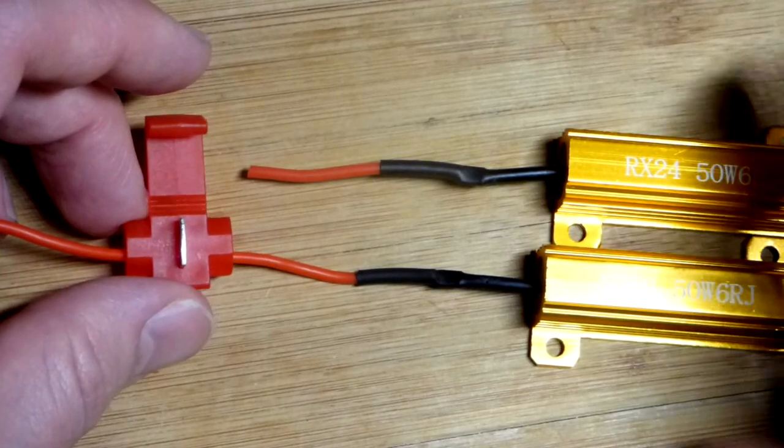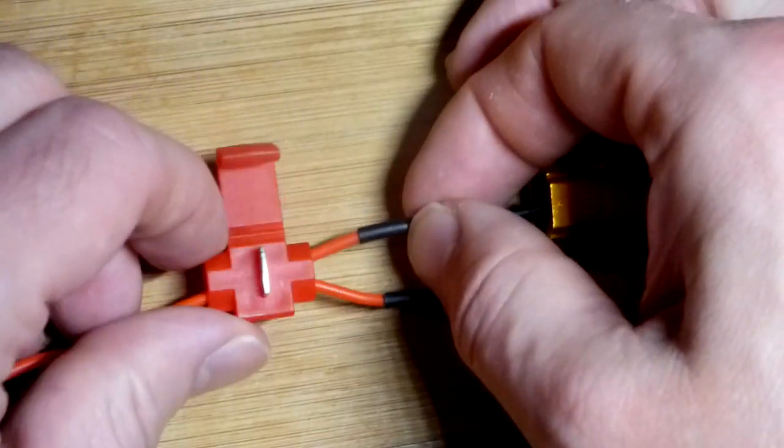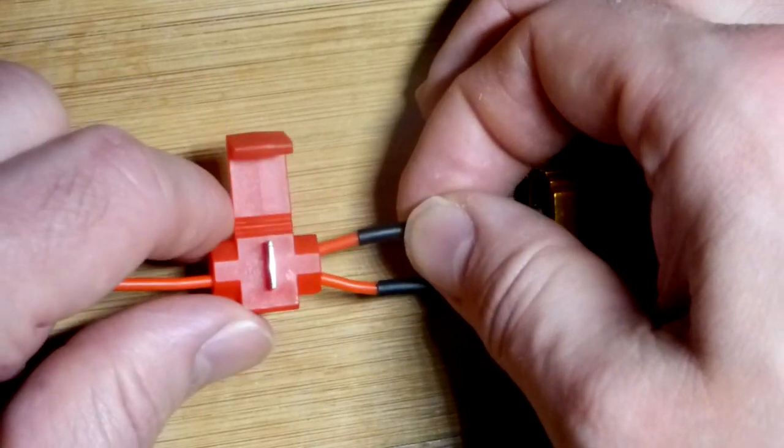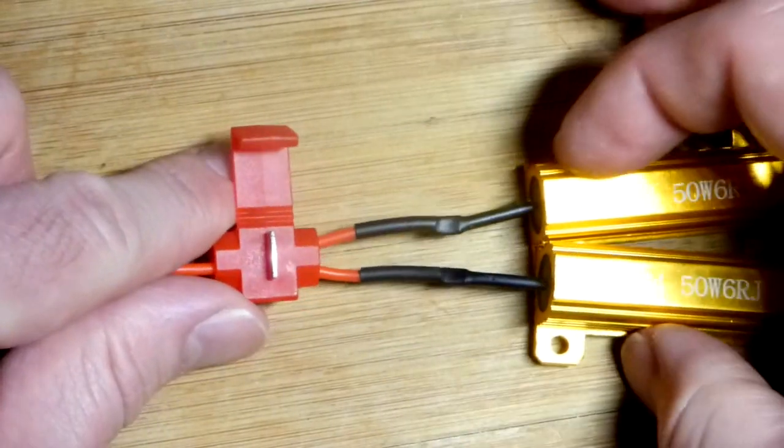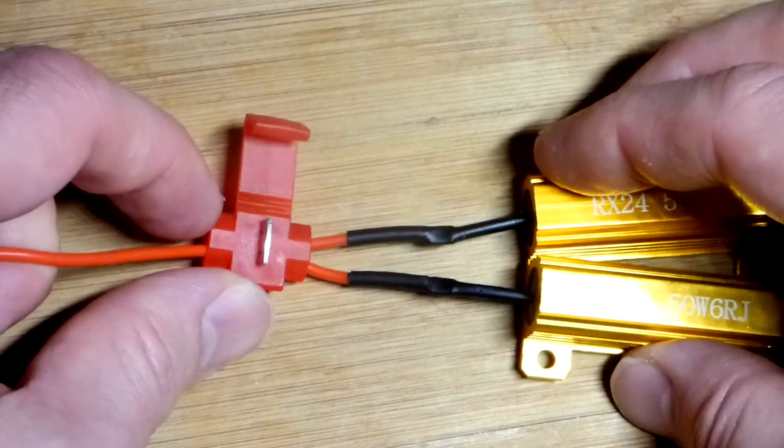And now I'm going to try to keep them lined up like this best we can, and so insert that until it hits the stop right there. And I'm going to try to adjust the other resistor so it's the same length. So I got this pushed all the way to that plastic stop.